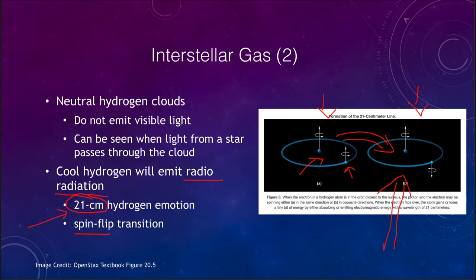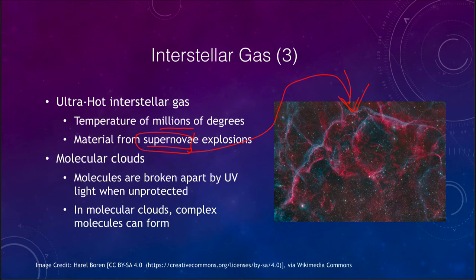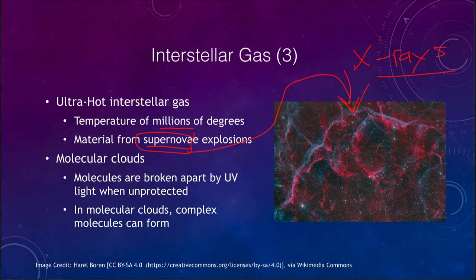Another way we can see the interstellar gas is through very hot gas — temperatures of millions of degrees. We see an example here of a supernova remnant, where the outer parts of a star have been expelled out into space. Those are also part of the interstellar medium — not only do we have cool clouds, but we have hot clouds. These tend to give off X-rays because of their very high temperatures and energy. This is where a lot of the enriched material comes from after it has gone through a star's life and created heavier elements from hydrogen and helium.